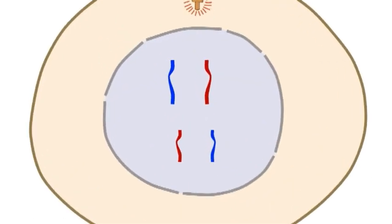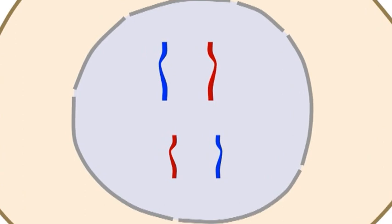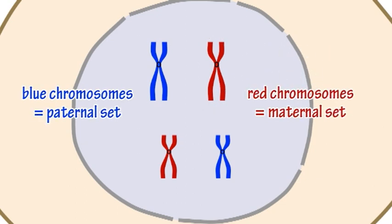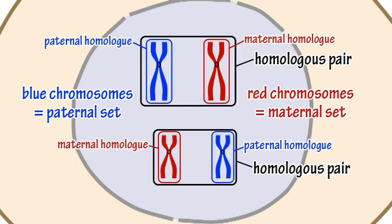Before meiosis 1 starts, the DNA of the chromosomes replicates, producing two chromatids per chromosome. As there are two sets of chromosomes in the cell to begin with, a maternal version or homolog and a paternal version or homolog for each pair in the set, this results in a total of four chromatids for every homologous pair of chromosomes.